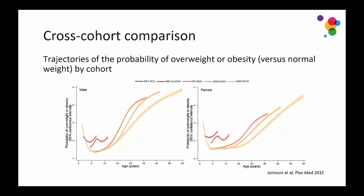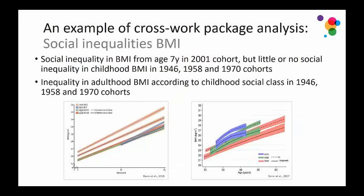Of the older three cohorts that have reached adulthood, the rise in probability of overweight or obesity starts at increasingly earlier ages. This very powerfully shows the impact of a more obesogenic environment — one that promotes over-consumption of unhealthy foods and discourages physical activity — an environment prevalent from around the 1980s onwards, which hit different generations at different life stages, with the youngest cohorts born into this environment.